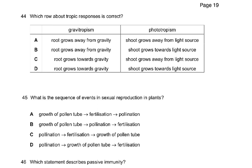Question 44: which row about the tropic response is correct? Gravitropism is movement towards gravity — roots always grow towards gravity. Phototropism means shoots grow towards light. So the answer is D: phototropism — shoots grow towards light, and roots grow away from light.